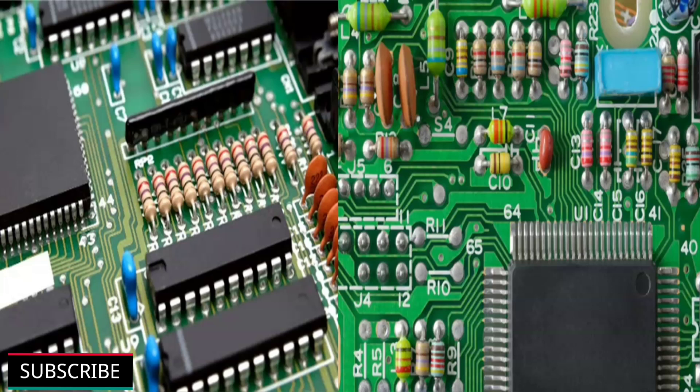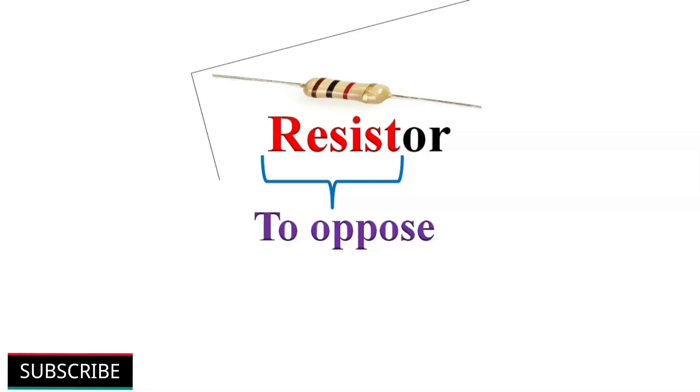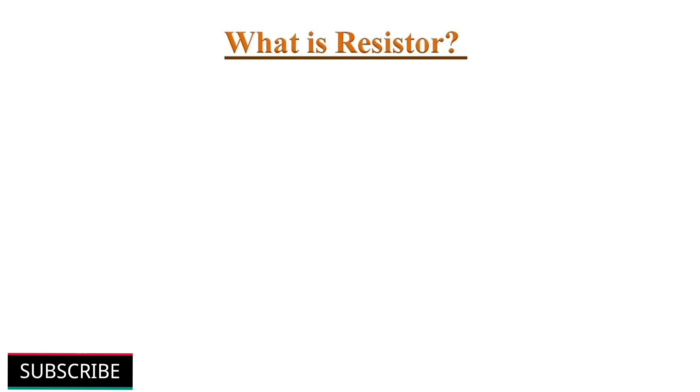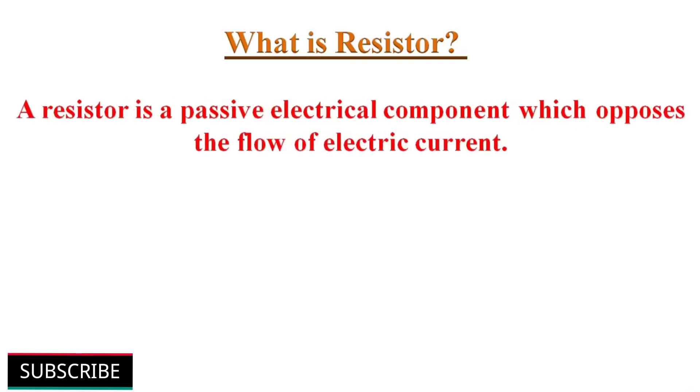Resistors are one of the most widely used components in electronic circuits. In fact, it is very hard to imagine any circuit without resistor. The principal job of a resistor in an electronic circuit is to resist, which means to oppose the flow of current, hence the name resistor. A resistor is a passive electrical component which opposes the flow of electric current. The most common symbol for a resistor is a zigzag line as per American standard, and on the right side symbol is as per International Standard IEC.